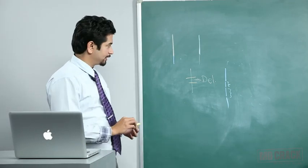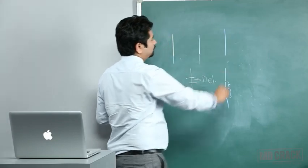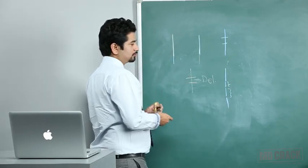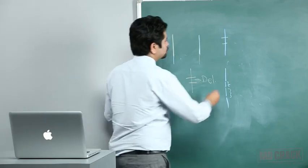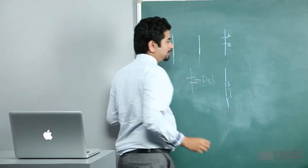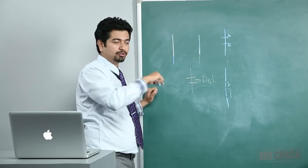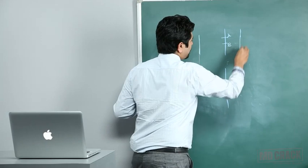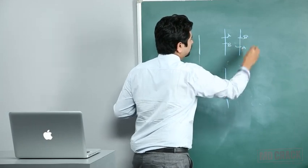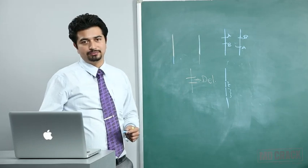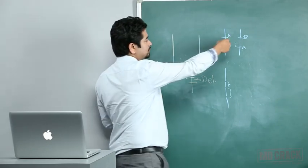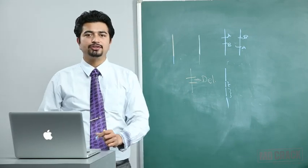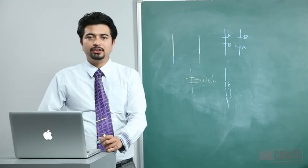Inversion occurs when a segment of a chromosome breaks off, rotates 180 degrees, and rejoins the chromosome in the reverse orientation. So if one end was A and the other B, after inversion the order is reversed — this piece simply rotates and rejoins.